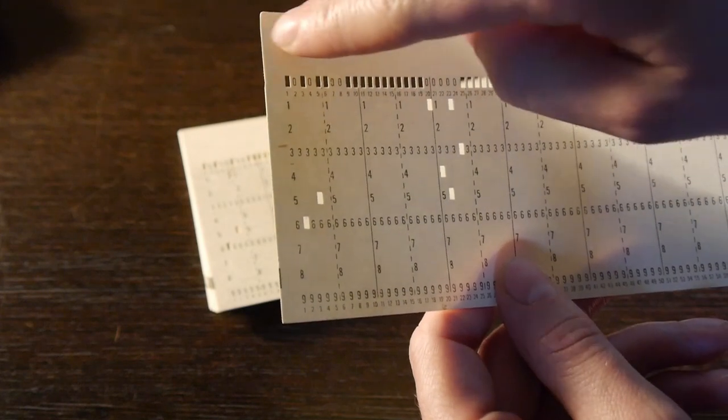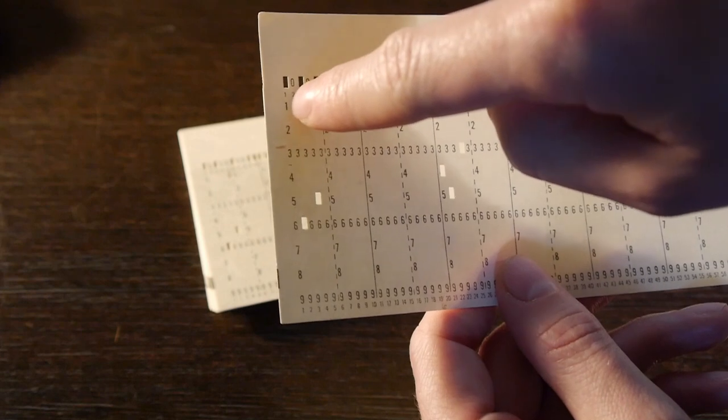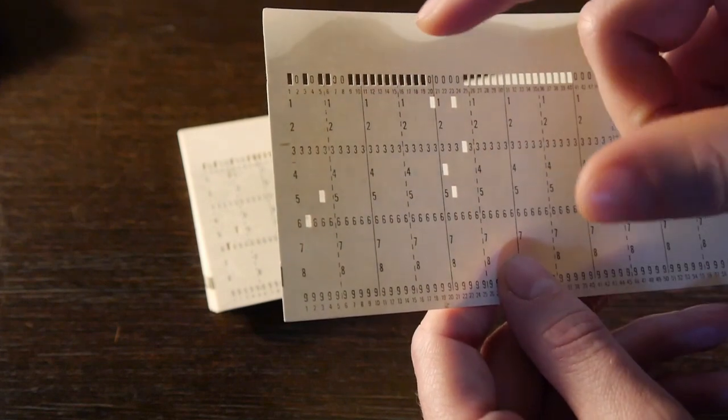For example, this is known as row 11 up here, this is row 1 you can't see, and this is 12. You might have a punch in row 12 and then a punch in row 1, and that would indicate the letter A, for example.